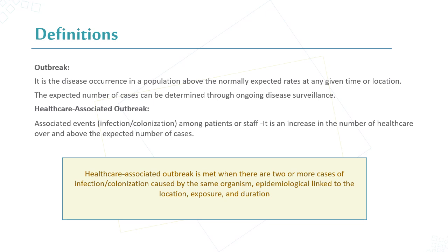According to the definitions, first we will talk about the general definition of an outbreak. It is the disease occurrence in a population above the normally expected rate at any given time or location. The expected number of cases can be determined through ongoing disease surveillance.